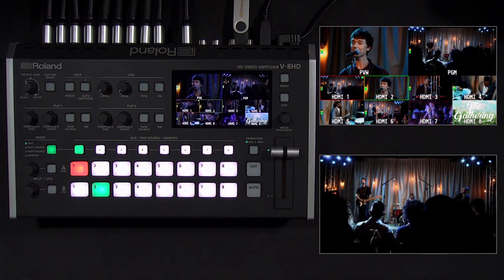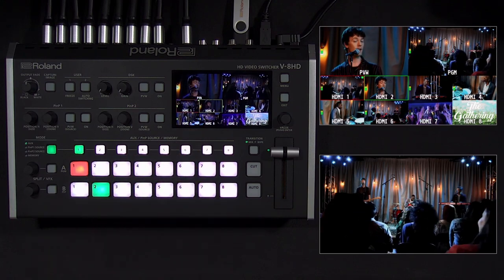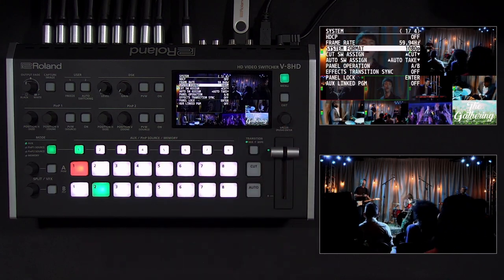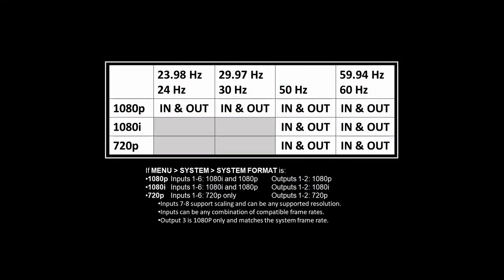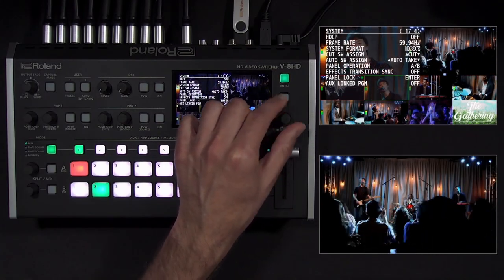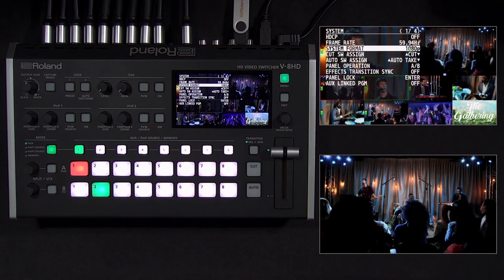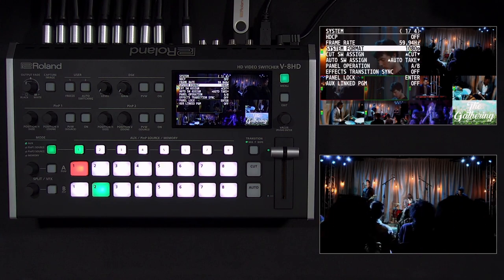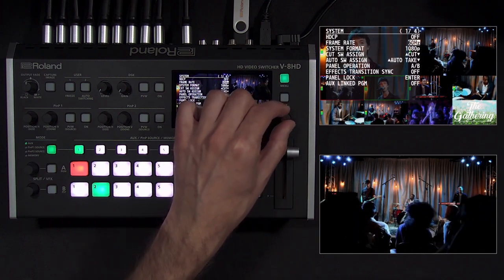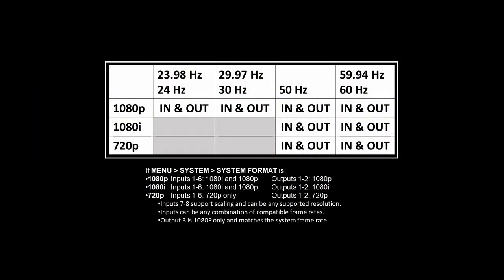When you connect video sources to the V8 HD's inputs, they will quickly appear on the multi-view. Inputs one through six need to have the same resolution as the system format setting in the system menu. By default, this is 1080p, meaning your sources can be either 1080i or 1080p. If your source is 480p or 720p, you can use inputs 7 or 8, and the scaler will resize it to 1080p. If most or all of your sources are 720p, change the system format on the V8 HD to 720p. The V8 HD will automatically convert frame rates, so your sources can be a mix of anything between 23.98 and 60Hz. The default output frame rate is 59.94Hz. Note that all outputs match the system frame rate, and outputs 1 and 2 match the system format setting. Output 3 is always 1080p.